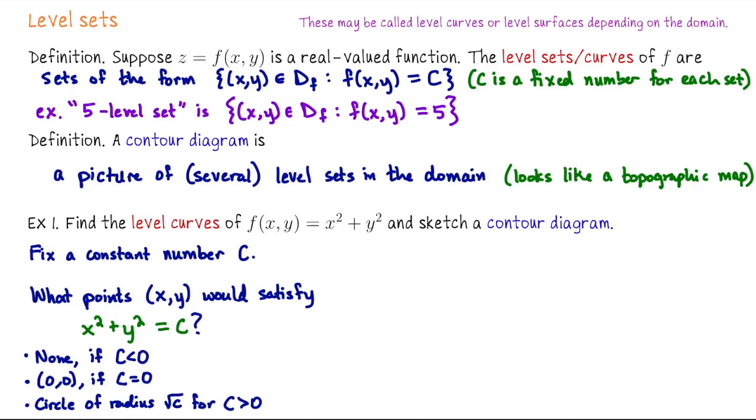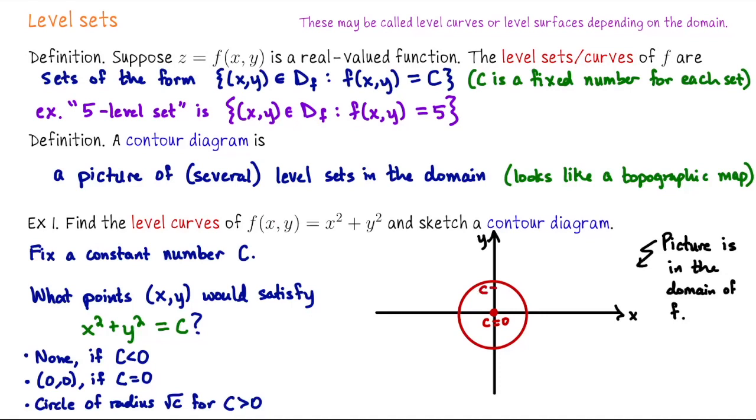So now we're going to take a few different values of c, sketch the level sets in the domain, so that's the xy plane, and that's going to form the contour diagram. So keep in mind this picture we're drawing lives in the domain of f. Here's the zero level set. That's just the origin. Then if we let c equal 1 we're looking at the unit circle. If c equals 2 we're looking at the circle centered at the origin whose radius is the square root of 2. If c equals 3 we just go outward a little bit, the circle would have radius square root of 3.